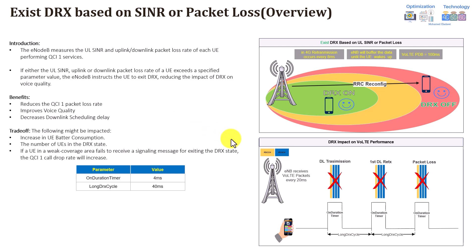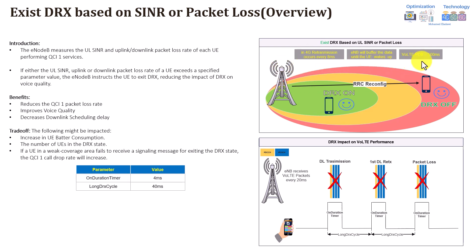Before explaining this improvement, let's recall three important points. First, in 4G retransmission, when the user is out of the TTI bundling state, retransmission happens every 8 ms — meaning if there is a failure to decode the transmitted packet from the eNodeB side, the retransmission will occur after 8 ms. Second, the VoLTE packet delay budget, as explained earlier, is 100 ms — any packet delayed beyond 100 ms will be discarded and lost.